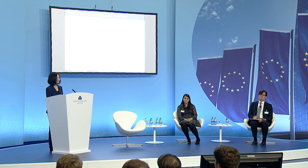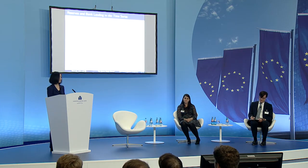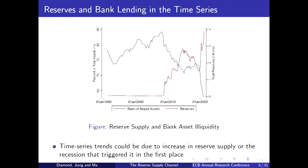One simple way to look at the data is to examine the time series. In red, I show reserves held by US depository institutions — a flat line before the crisis that distinctively jumps during the financial crisis and again during COVID. In blue, I plot the ratio of illiquid assets on bank balance sheets, essentially lending extended to the real economy. What you see is almost a mirror image: when the red line jumps up, there's a simultaneous drop in the blue line, suggesting that as reserves go up, the banking sector lends less as a proportion of its asset size.